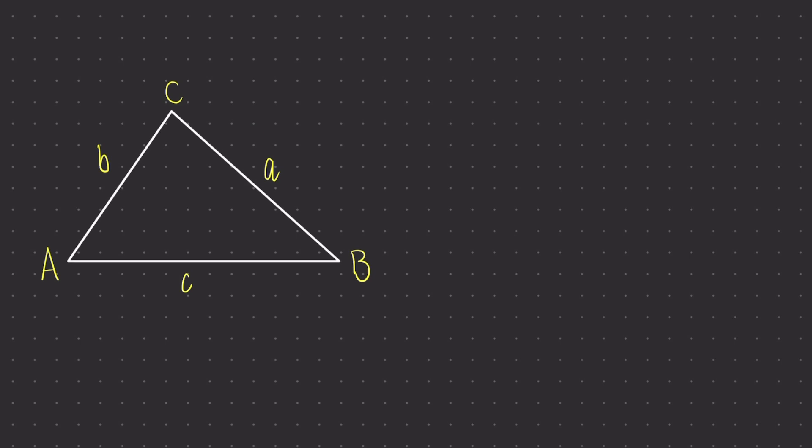Much like the sine rule, the cosine rule is used in situations where we don't have a right-angled triangle. This is how we're going to label our triangle, with the capital letters representing the angles and the smaller lower case letter opposite the angle representing the sides. When we're going to use the cosine rule, we need to look out for what I like to call the sandwich. This consists of one side of the triangle, an angle, and the second side of the triangle that completes the sandwich. We can remember this by thinking of side, angle, side.